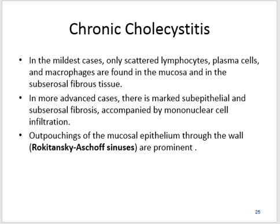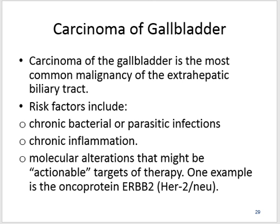Subserosal vessels are thrombosed. In chronic cholecystitis, we may also see porcelain gallbladder — extensive dystrophic calcification within the gallbladder wall — or xanthogranulomatous cholecystitis. The gallbladder has a massively thickened wall and is shrunken, nodular, and chronically inflamed. Carcinoma of the gallbladder is the most common malignancy of the extrahepatic biliary tract. Risk factors include chronic bacterial or parasitic infections, chronic inflammation, and molecular alterations that might be actionable targets of therapy.